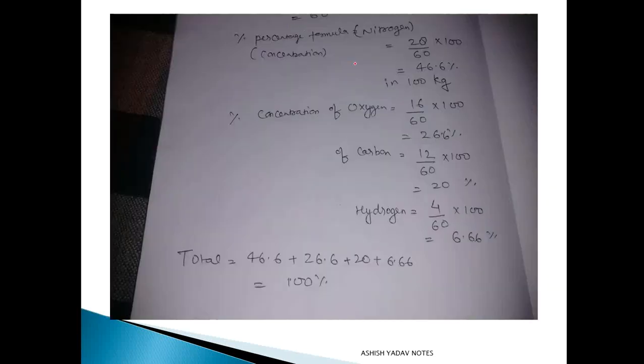After getting this, you have to find the nitrogen percentage. Now it's basic percentage. You have to find nitrogen: put nitrogen and then put total atomic weight out of 60, and from how much kg, from 100 kg, put 100. So after solving this you will get 46.6 percent. So in 100 kg there is 46.6 percent nitrogen.